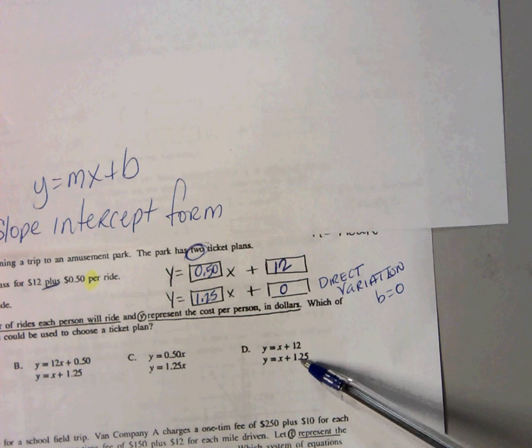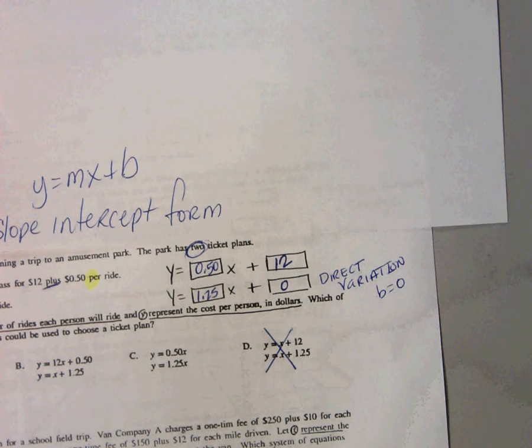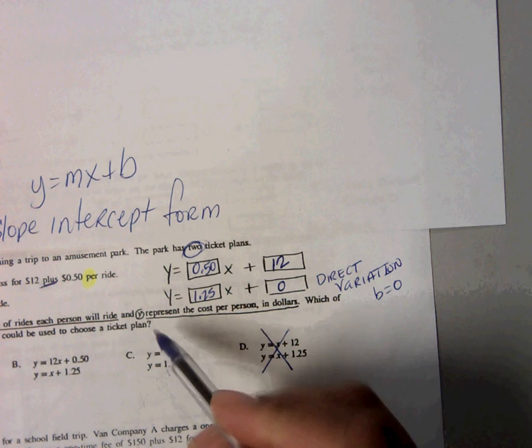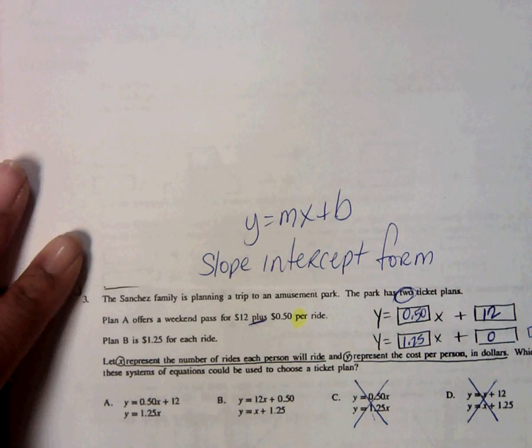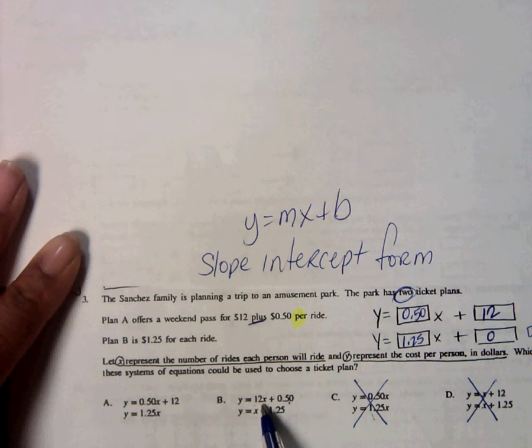So we look at D. It does not manage, so it is incorrect. We look at C. It's missing information. We look at B. And I see the 12, I see the 50 cents, but the 12 is supposed to be by itself and not next to the x. That makes that incorrect.